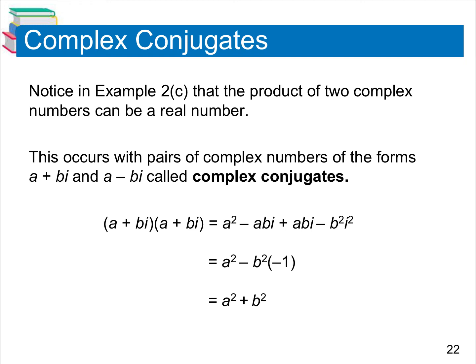This is 2.3 part 2. We're still looking at complex numbers, but today we're going to be focusing on complex conjugates. When you are dividing or simplifying a fraction that has complex numbers in the denominator, you are going to take the complex conjugate of your denominator and multiply it by itself and the numerator. If you have something in a plus bi form, it would end up being a minus bi as the conjugate.